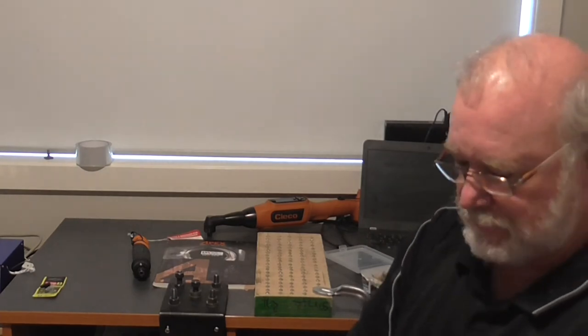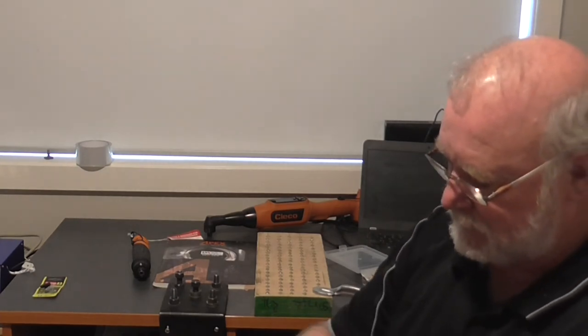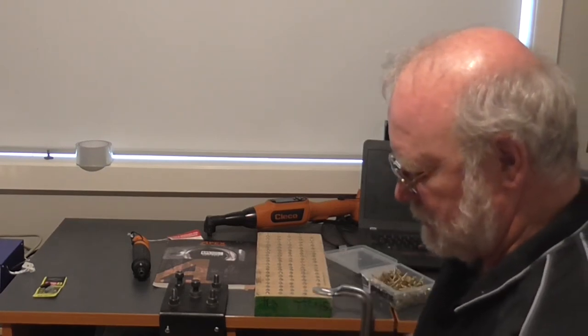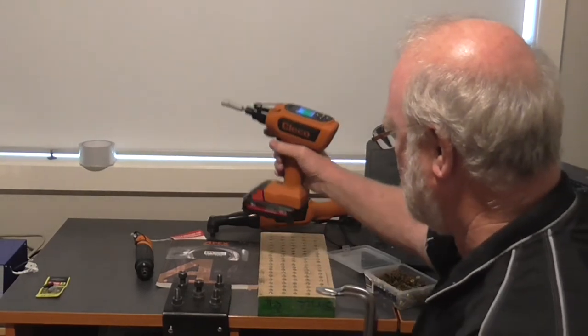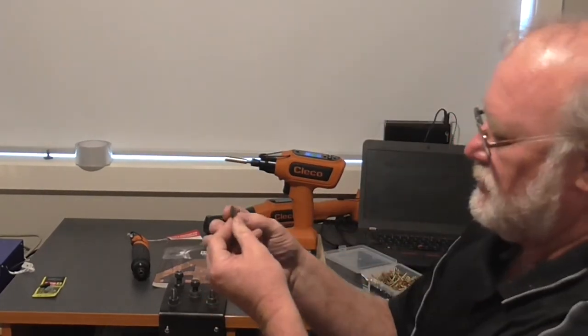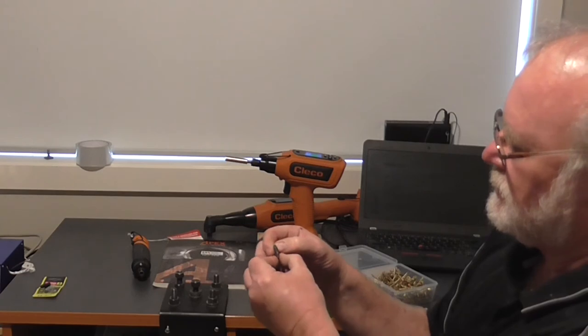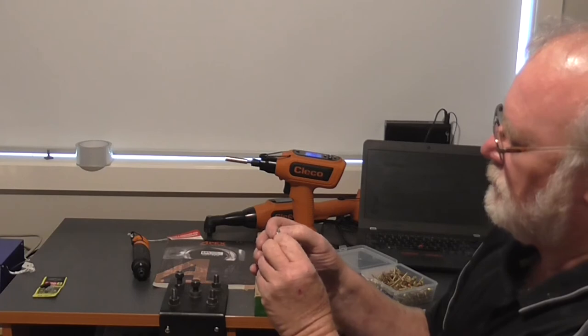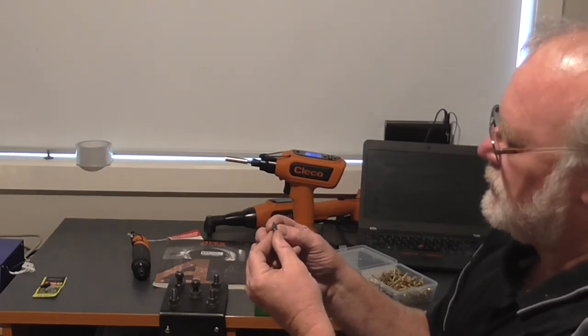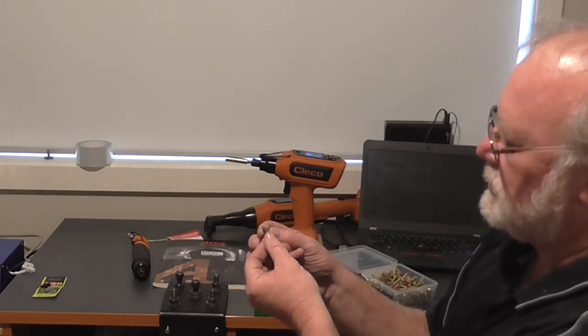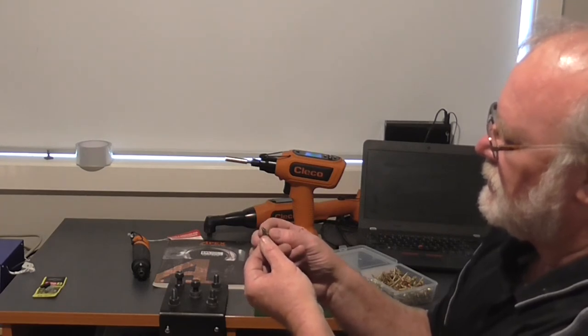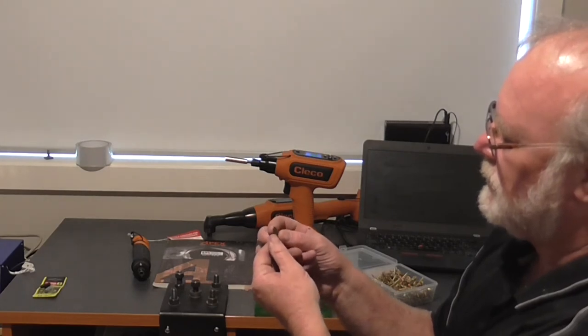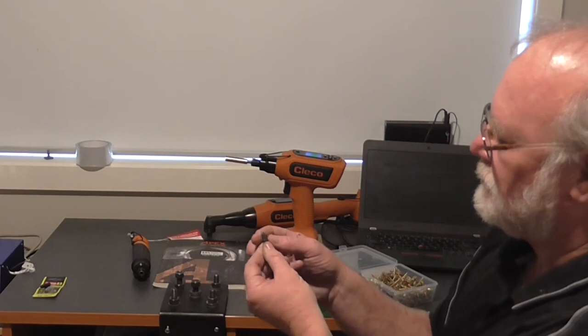100 screws driven in with the Apex 27 series screwdriver tip. Let's see what sort of wear we have. There is no wear whatsoever on that screwdriver tip. The drive edges, it's just a little bit shiny, just a little bit of shine on right on the edge of the drive tip.